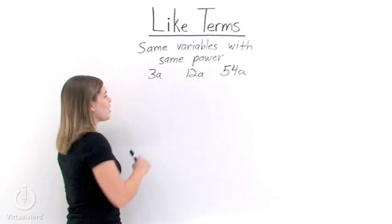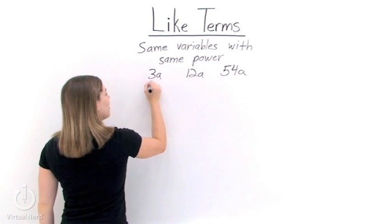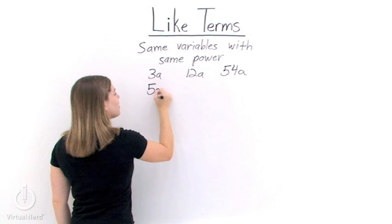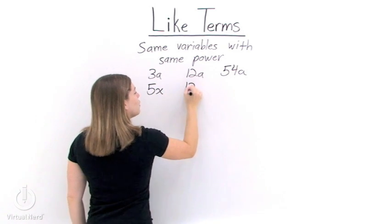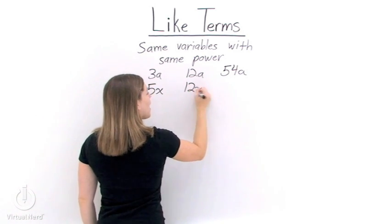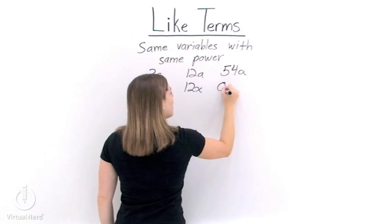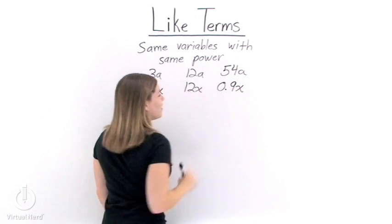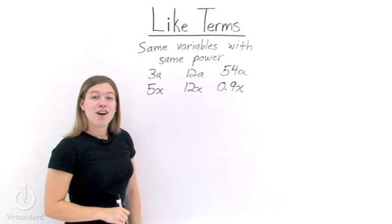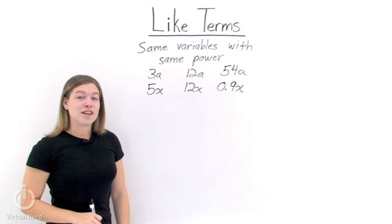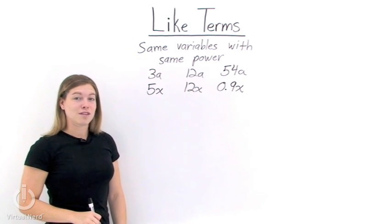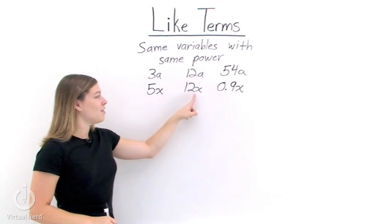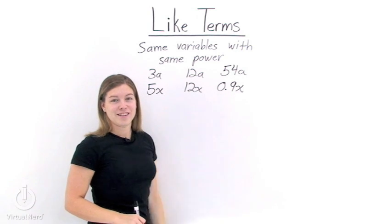Let's look at a few more like terms. We'll have 5x, 12x, and 0.9x. Again, all three of these are like terms. They all have the variable x raised to the first power.